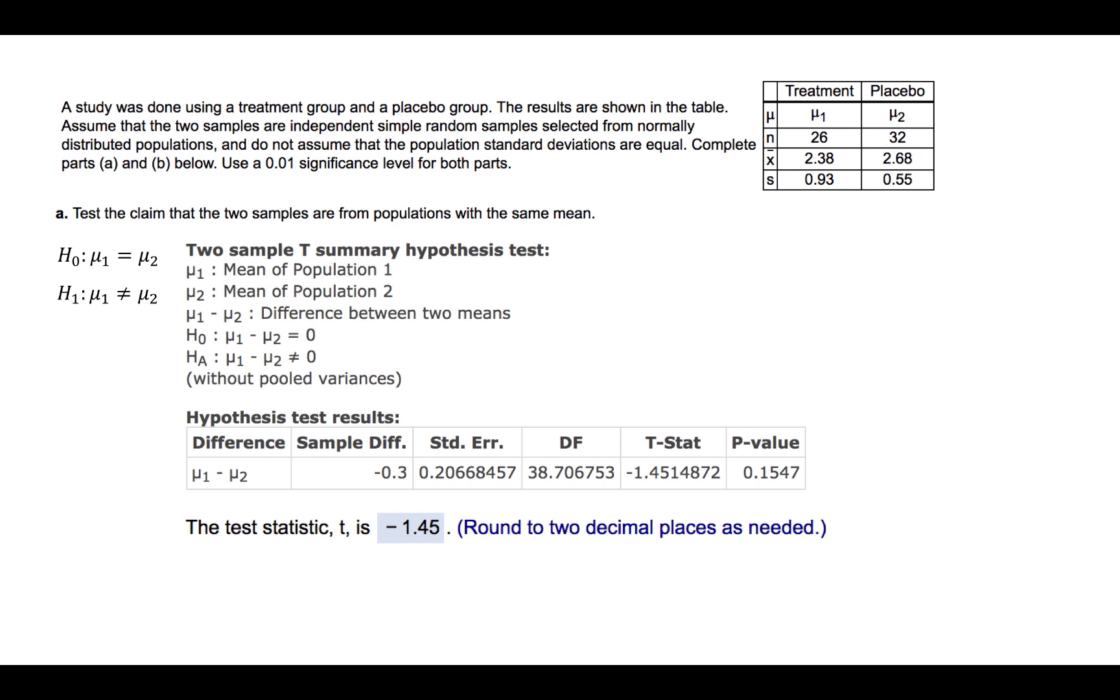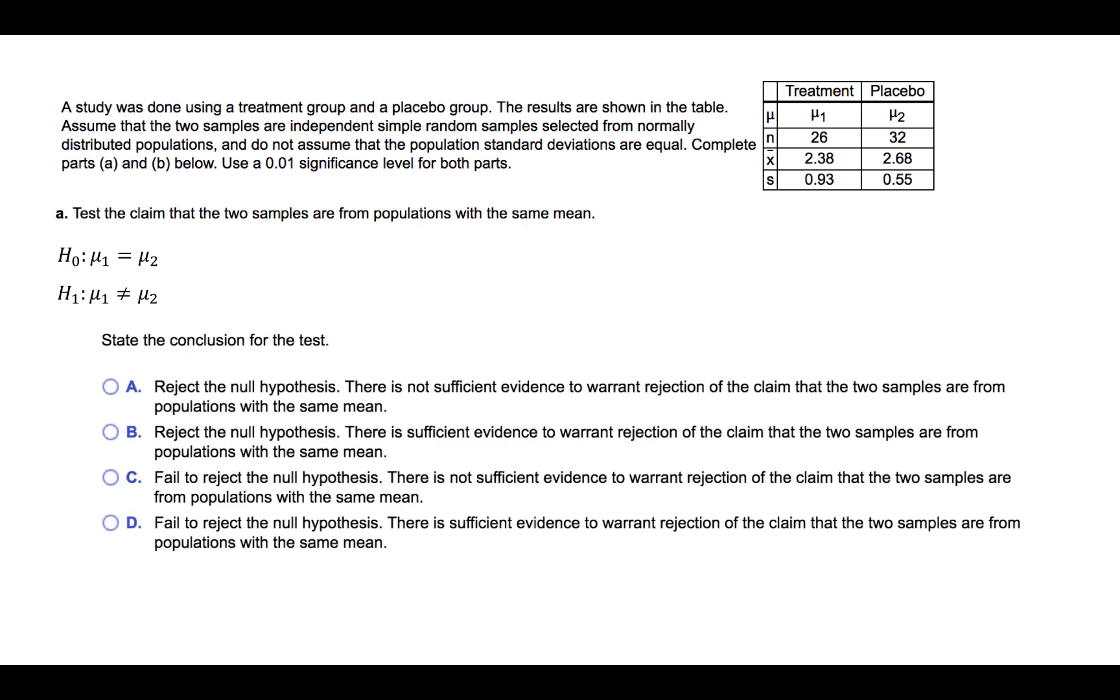It also gives us a p-value of 0.1547. Next, we are asked to draw a conclusion for the test. Remember that the p-value was 0.1547. We are told that the significance level is 0.01. Since the p-value is greater than the significance level, or alpha, we should not reject the null hypothesis.